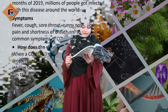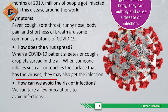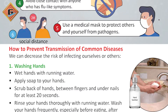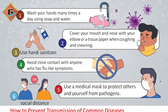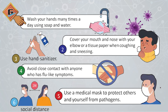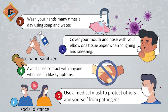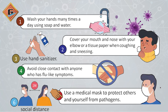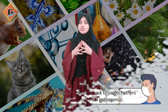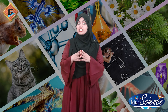How can we avoid this infection? On page 34: wash your hands many times a day using soap and water, cover your mouth and nose with your elbow or tissue when coughing and sneezing, avoid close contact with someone that has flu, and use a medical mask to protect others and yourself from pathogens. This is how we can avoid diseases such as COVID-19.